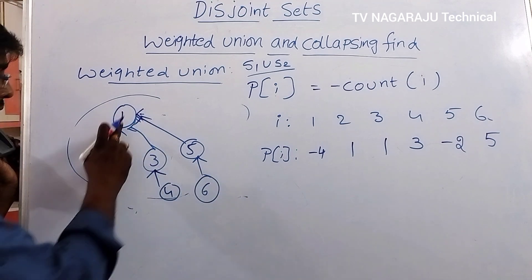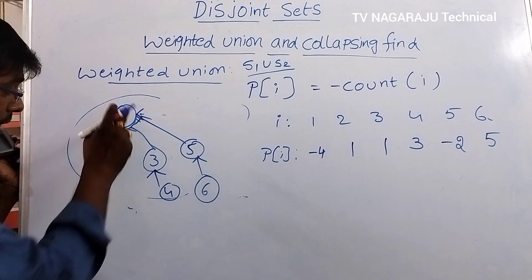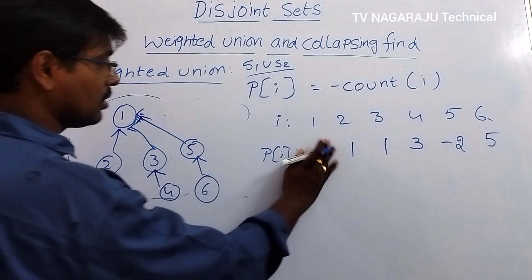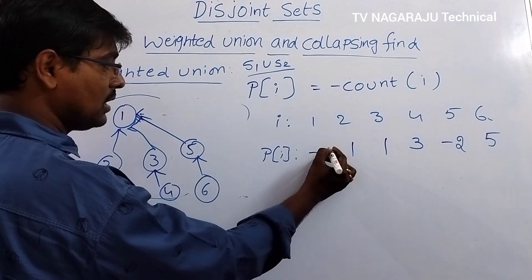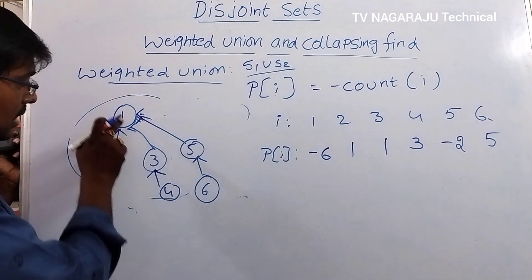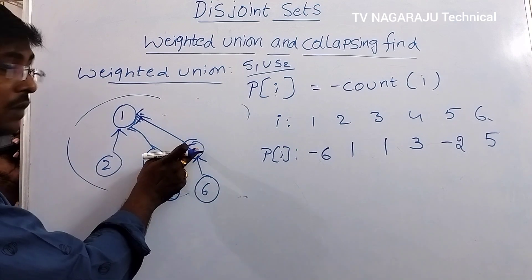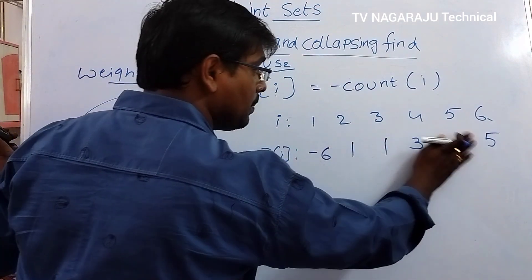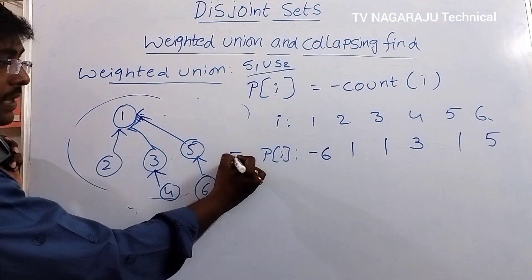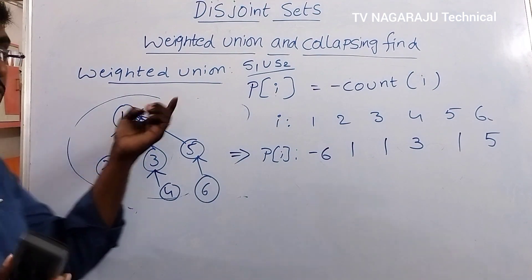After the union, we update the parent values. Node 1 now has 6 nodes total (1, 2, 3, 4, 5, 6), so P(1) is updated to minus 6. Node 2's parent is 1. Node 3's parent is 1. Node 4's parent is 3. Node 5's parent is updated to 1. This is the final state after performing weighted union.